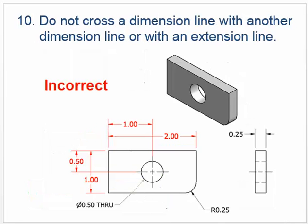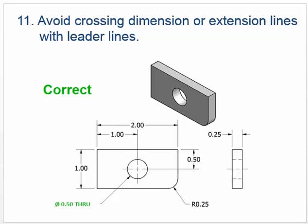Do not cross a dimension line with another dimension line or with an extension line. Notice here the .5 and the 1 inch are intersecting each other, and the 1 and 2 inch are also intersecting. The fix is to move the smaller dimension in and the larger one out, and adjust the vertical ones accordingly — now it looks a lot cleaner.